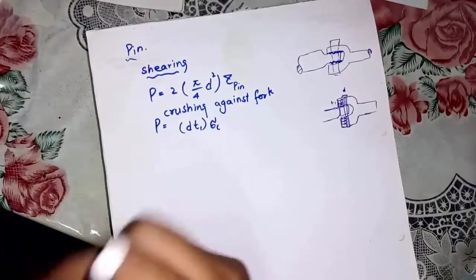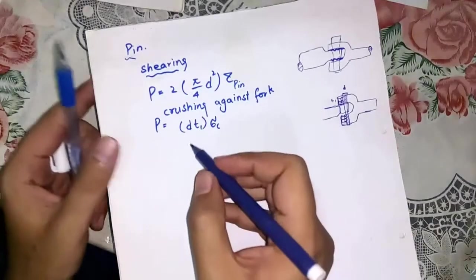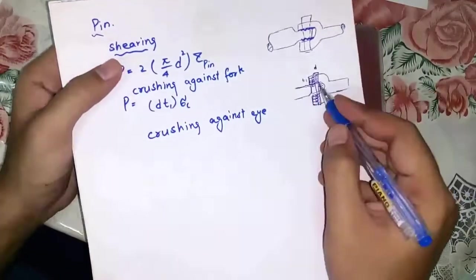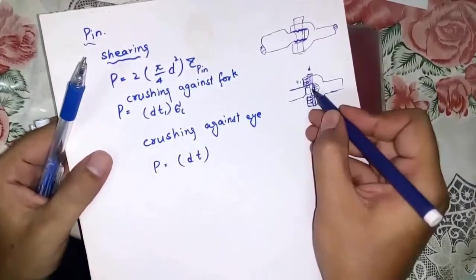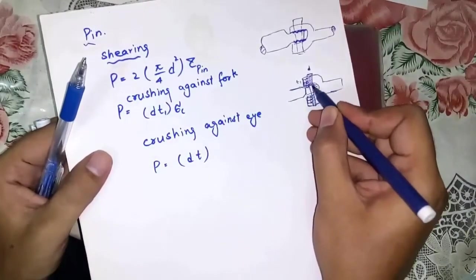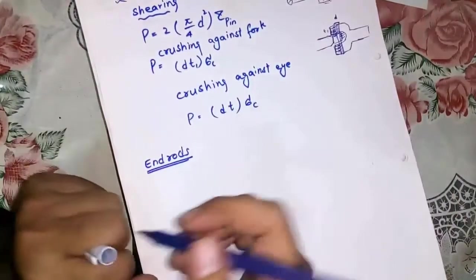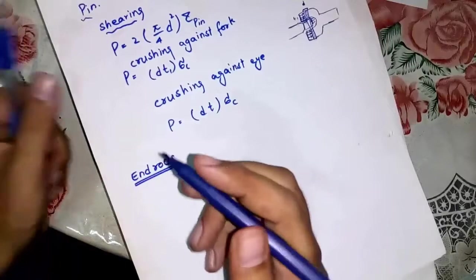Now crushing due to the eye. In the same way, the eye may crush the pin. Here is formula: d is diameter of pin and t is thickness, so this area would crush. Next, end rods which have diameter d. Here is formula.